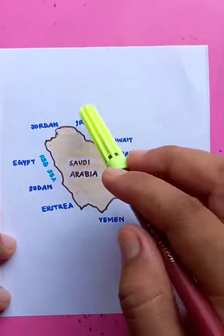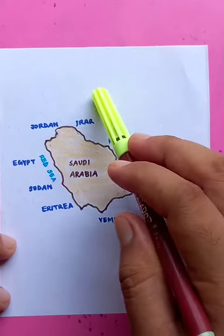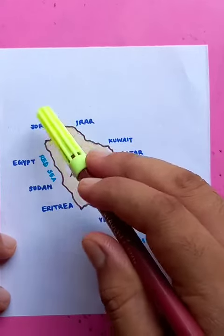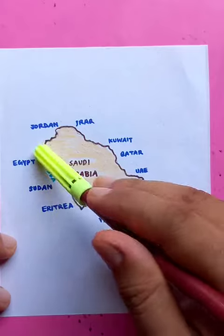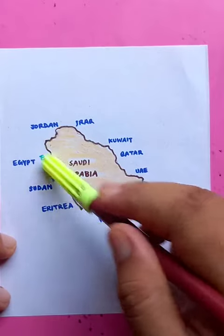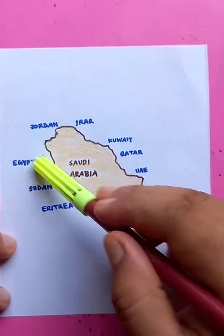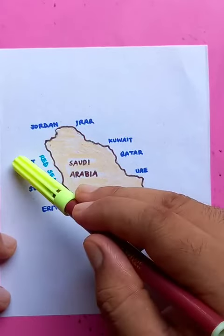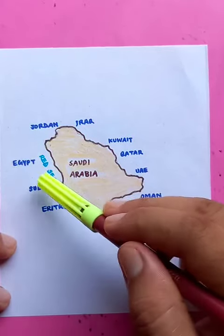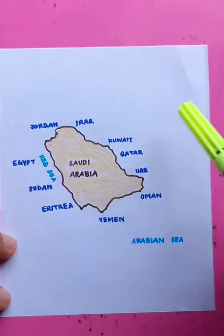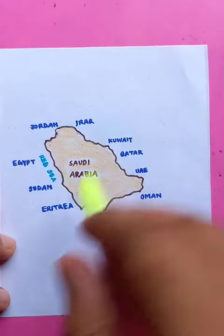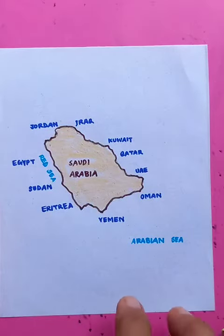Kuwait on the eastern side, Iraq on the north side, Jordan on the north side, Egypt after the Red Sea — there's a Red Sea here. Then comes Egypt, Sudan, and Eritrea. All these countries have borders with Saudi Arabia.